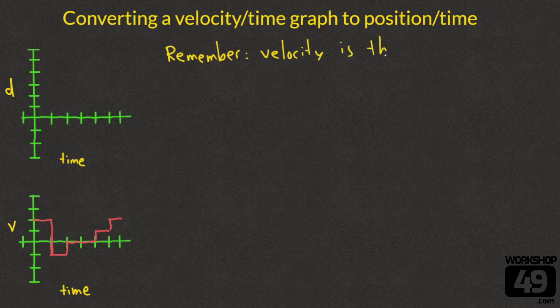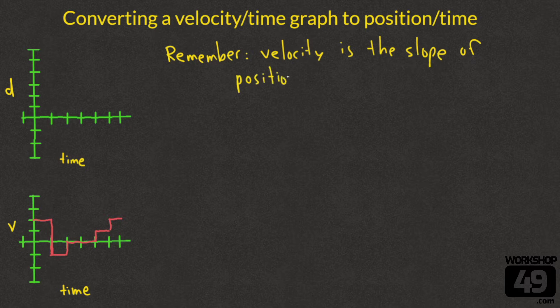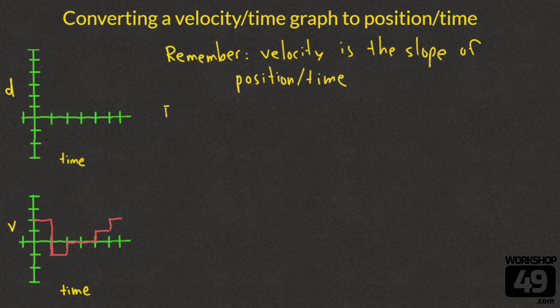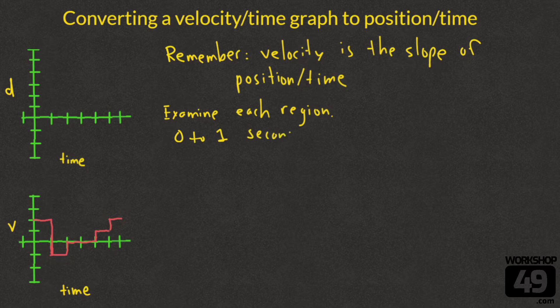The huge thing to remember is that velocity is the slope of a position time graph. That is literally what the velocity graph represents, the slope of each region of our position time graph. So we're going to be examining each interval on that velocity time graph, measuring what it is and knowing that that's what our slope is of the position time graph.